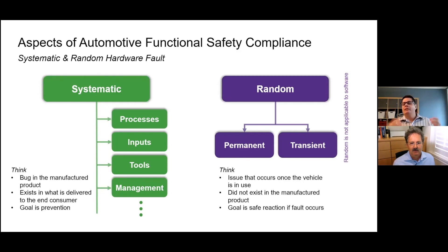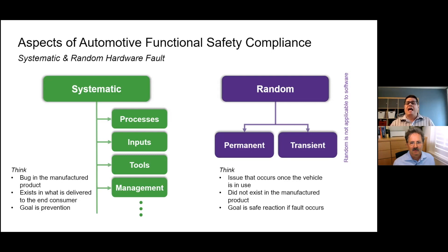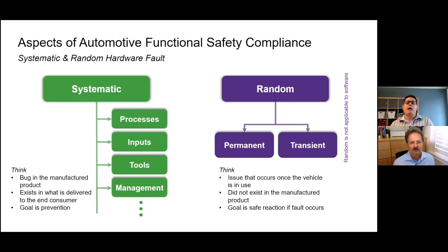When we talk about systematic, we're really talking about everything that comes together — whether it be your processes, whether it be how you run a program, the tools that you use — to avoid there being any bug in the manufactured product. This could be an issue in the functional safety mechanisms themselves, or in the normal functionality of the design. When we talk about random, we're talking about things that happen during the operation of the vehicle, and this drills down into two different areas: permanent and transient. Permanent, for example, is transistor wearout or electron migration — something you can't recover from. Transient is something that happens that you can't avoid, but you try to react to it in a safe way, like a soft error event flipping a bit in a register cell. So with systematic, the goal is prevention, and with random, it's the safe reaction to these types of events if they were to occur.